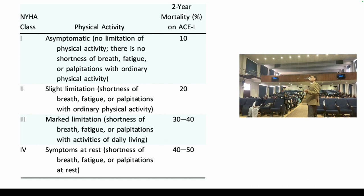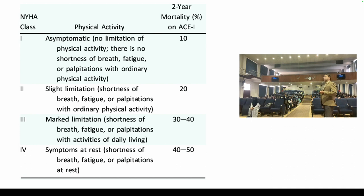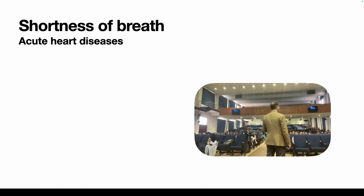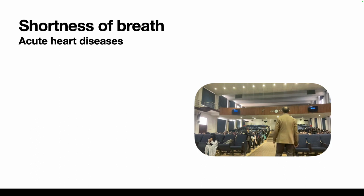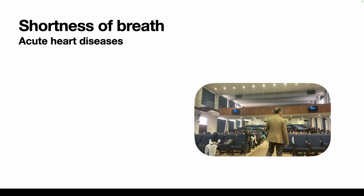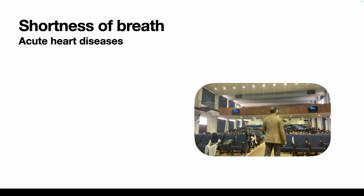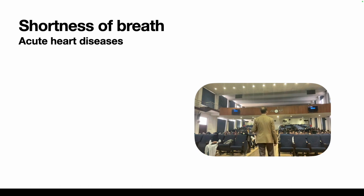The NYHA (New York Heart Association) classification relates to shortness of breath and has four grades with associated two-year mortality data. Shortness of breath can also develop acutely. When the patient develops acute pulmonary edema, there is a discrepancy between left and right heart cardiac output: left heart output decreases while right heart output remains normal, causing blood to pool in the pulmonary circuit and lung compliance to decrease.